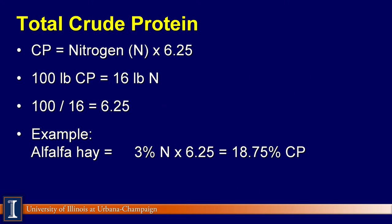For example, alfalfa hay contains 3% nitrogen. If 3% nitrogen is multiplied by 6.25, it yields 18.75% crude protein in alfalfa hay.